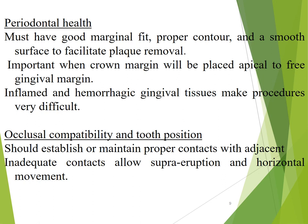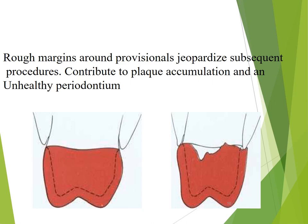Regarding periodontal health, there should be a proper contour, marginal fit, and a smooth surface to facilitate plaque removal. It is also important when the crown margin is placed apical to the free gingival margin. Inflamed and hemorrhagic gingival tissue makes procedures difficult, so it should be avoided. There should be occlusal compatibility and tooth position — it should establish and maintain proper contact with adjacent teeth, as inadequate contact allows supra-eruption or horizontal movements.